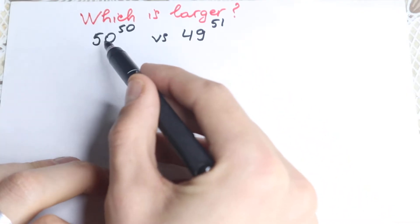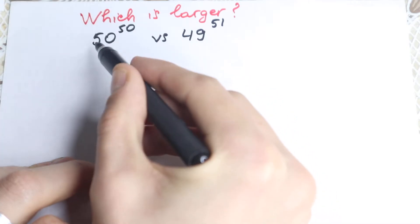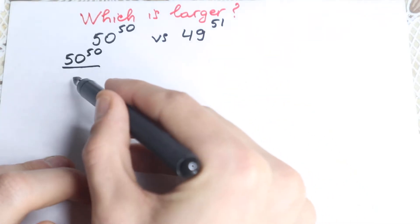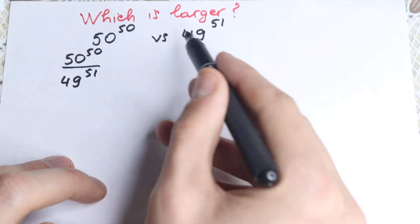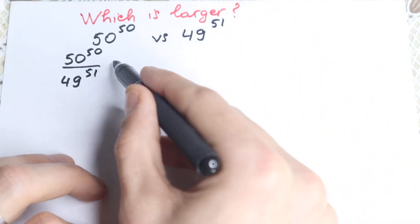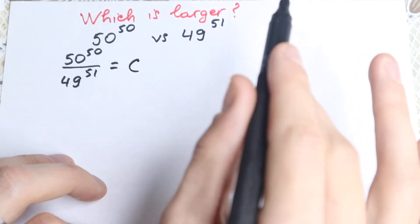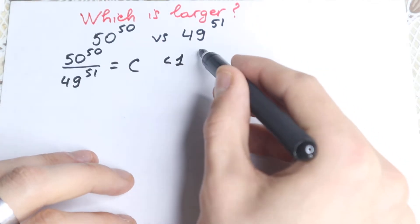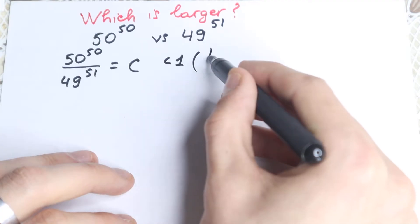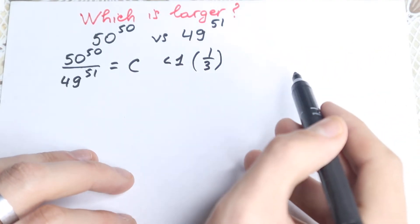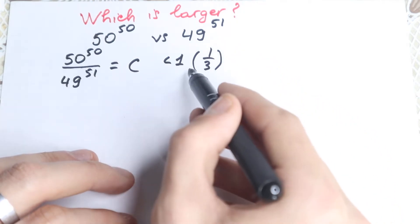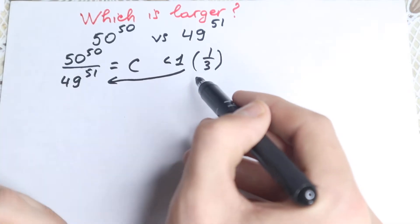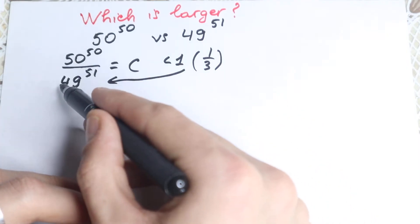I want to show you a really interesting approach. These are some numbers and we don't know about them yet. If we divide our left number — 50 to the power of 50 — by the right number — 49 to the power of 51 — we will have our answer. Let's call this number c. If c is less than 1, for example c equals 1/3, then we can easily say that our denominator is greater — because 1/3 means the denominator is 3, which is greater than 1.